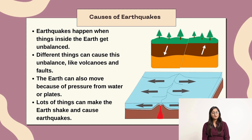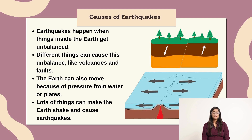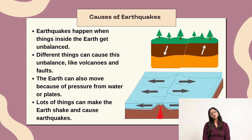Causes of earthquake. Earthquakes happen when things inside the earth get unbalanced. Different things can cause this unbalance, like volcanoes and faults. The earth can also move because of pressure from water or plates. Lots of things can make the earth shake and cause earthquakes.